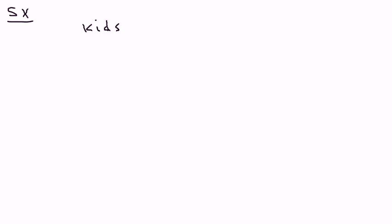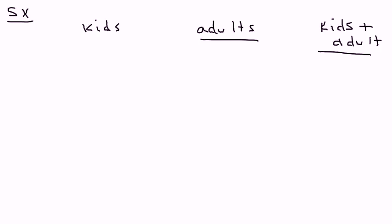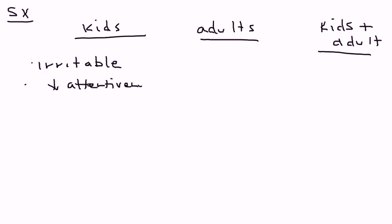There are certain very specific symptoms in kids and in adults. In kids, a child will be irritable, there will be a decreased level of attentiveness, and then later, as this becomes more serious, the child can develop encephalopathy.